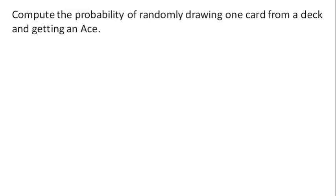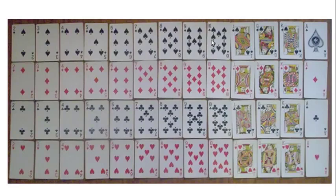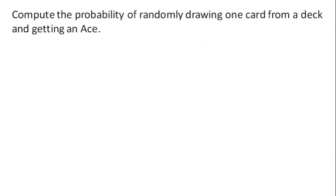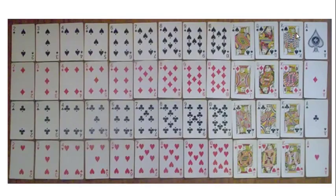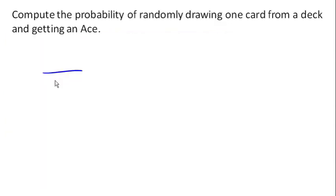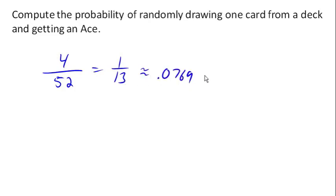If you're not familiar with the deck of cards: there are 4 suits — spades, diamonds, clubs, and hearts. There are the numbers 2 through 10, an ace which corresponds with a 1, and then 3 face cards: the jack, the queen, and the king. To compute the probability of randomly drawing one card and getting an ace: there are 13 different cards for each of 4 suits, so 52 possible cards. Out of those, how many are aces? Four. So there is a 4 out of 52, or 1/13, or about 7.69% probability of randomly drawing an ace.